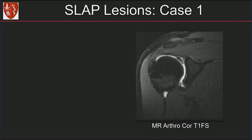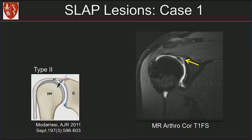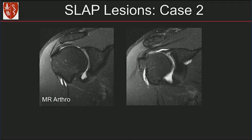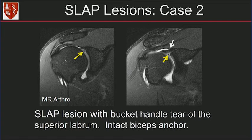Here's a first SLAP case — MR arthrogram coronal image. You can see abnormal signal into the labral substance and into the biceps anchor. This is described as a type 2, but we'll report it as a SLAP lesion with stripping of the biceps anchor. Another case: on these coronal images, notice a tiny fragment of labrum that's displaced, almost similar to a bucket-handle meniscal tear. The biceps anchor looks intact — dark signal, no high signal going through. We'll report this as a SLAP lesion with a bucket-handle tear of the superior labrum and an intact biceps anchor.